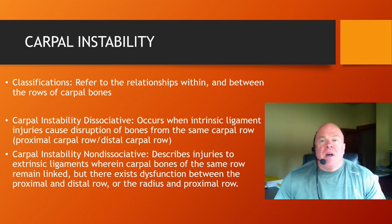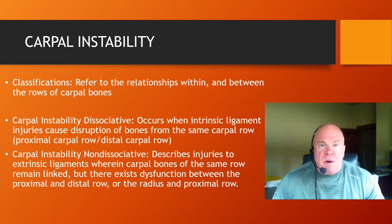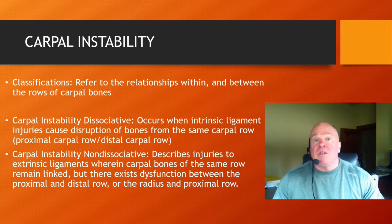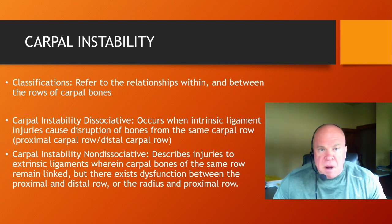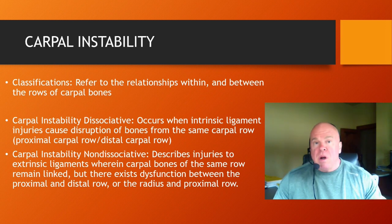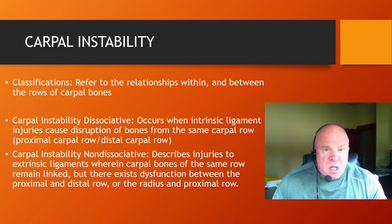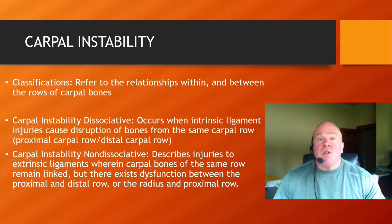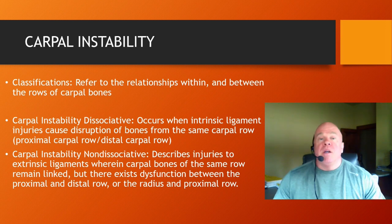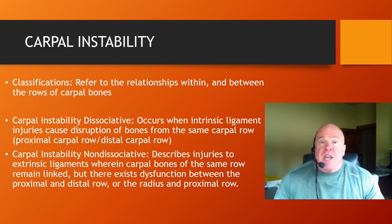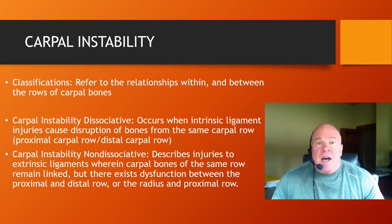The AMA Guides provide for permanent impairment ratings for each of these different types — specific permanent impairment ratings and descriptions for dissociative types and also for non-dissociative types of carpal instability patterns. Let's take a look at those.